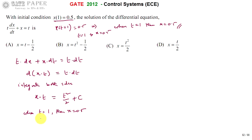So 0.5 × 1 = 1²/2 + c. So 0.5 × 1 is 0.5, 1² is 1, 1/2 is 0.5 plus c. 0.5 and 0.5 get cancelled. The constant value is 0.